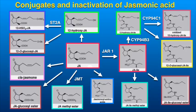Inactivation of JA or JA-isoleucine occurs by hydroxylation and is mediated by members of the cytochrome P450 family, like cytochrome P94BC and cytochrome P94C1. Inactive JA-glucose esters have also been detected, which are probably the transport forms of JA.